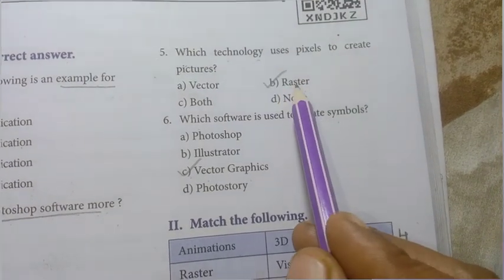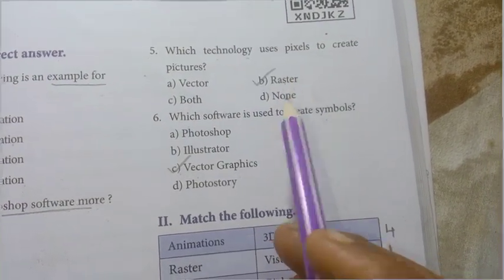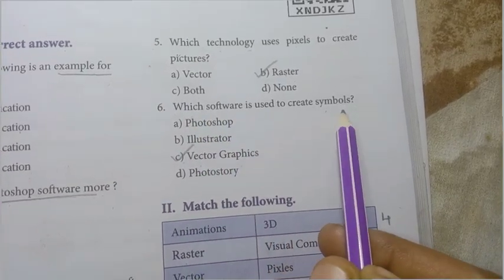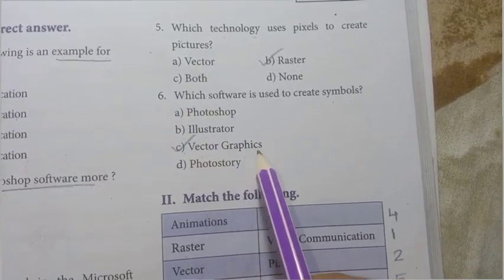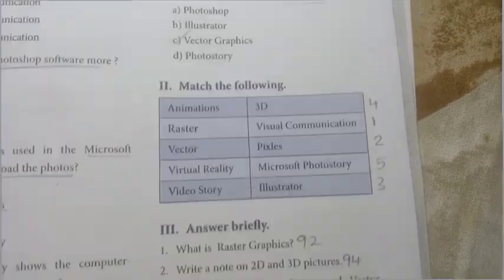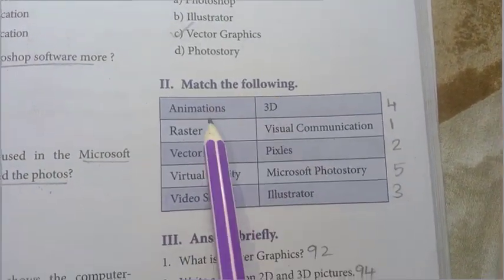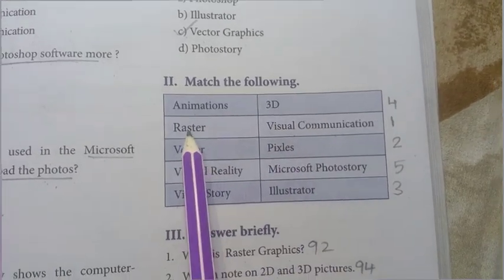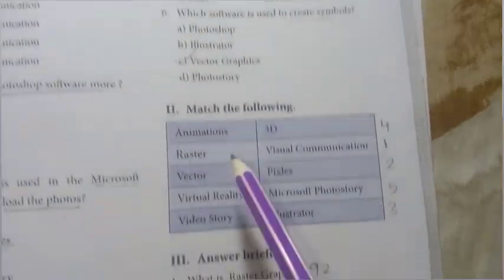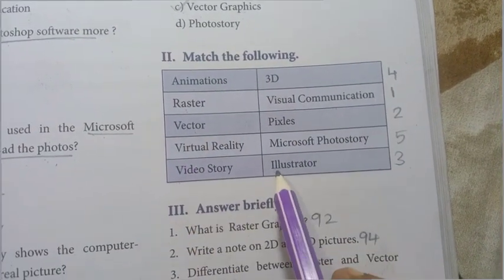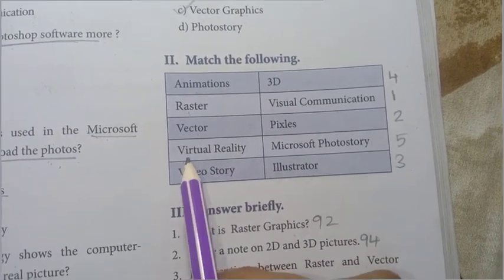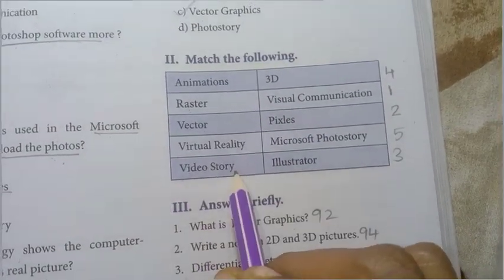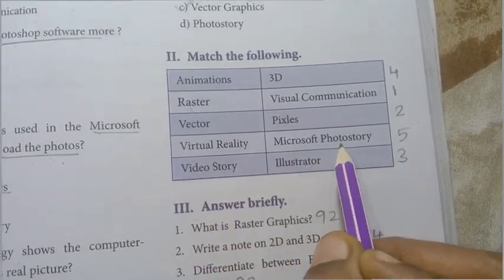Raster — what is raster? That technology is used. Which software is used to create symbols? To create symbols using vector graphics — that is vector graphics. Match the following: animations is visual communication, then raster uses pixels, vector uses illustrator, virtual reality is 3D, video story is Microsoft Photo Story.